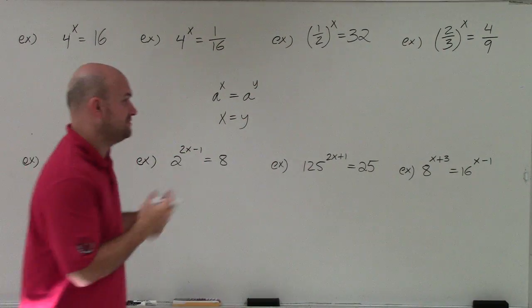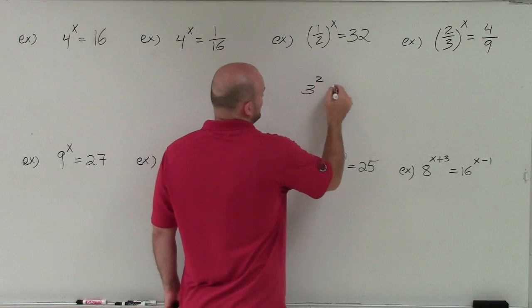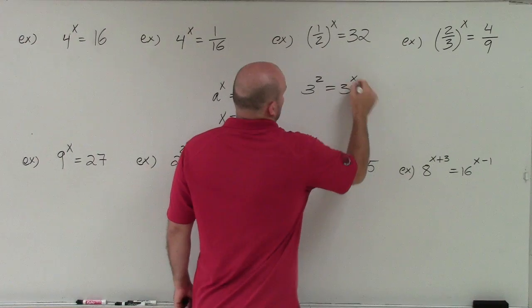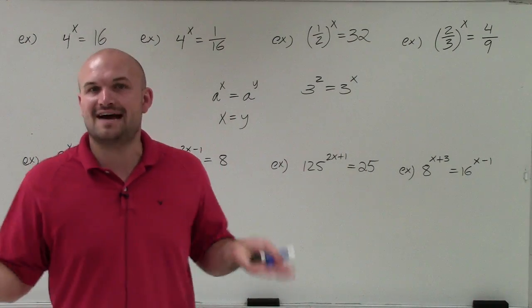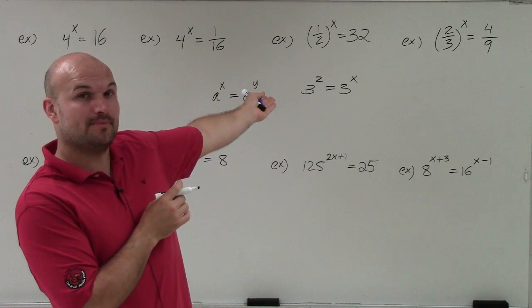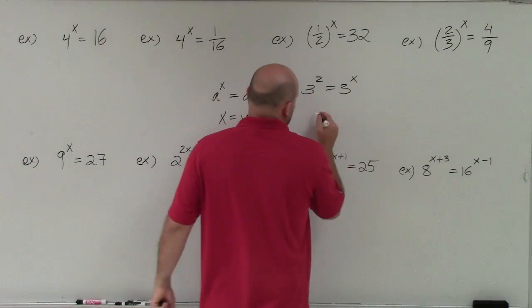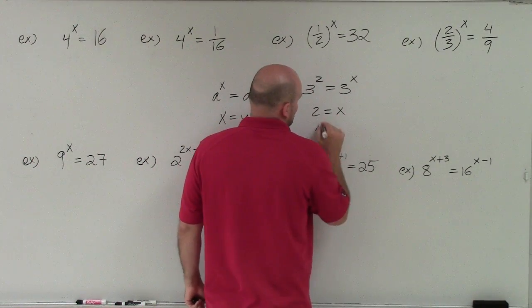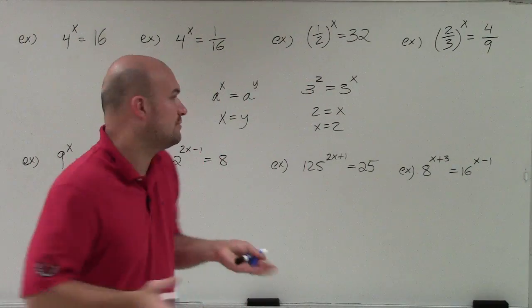That's your formal definition, and the way I think about it is think about it in real numbers. If I had 3 squared is equal to 3 to the x, then what does x have to equal? If both sides are equal to each other and we know one power is 2, the other power is x, what does x have to be? Well, it's obvious 2 has to equal x, or x has to equal 2. Right? So that's basically the one-to-one property.